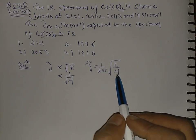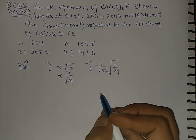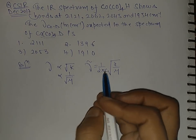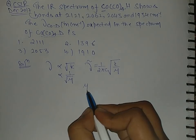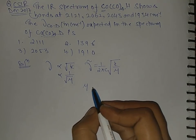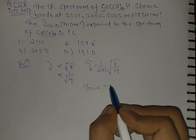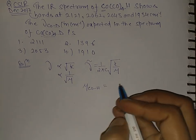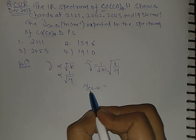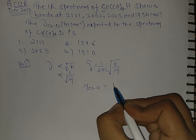So it is directly proportional to the root of the bond constant and inversely varies with the root of reduced mass. So let's write for this - this is a cobalt. Let's write reduced mass for cobalt and hydrogen. This is how much reduced mass is given by m1 m2 over m1 plus m2.